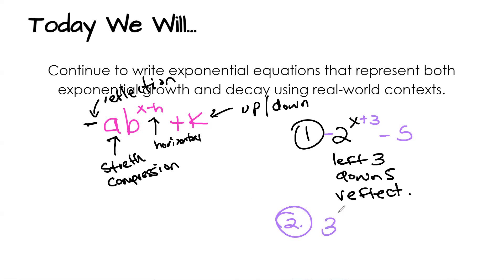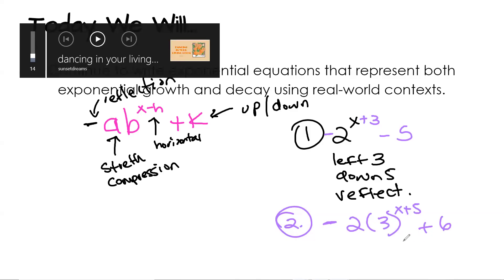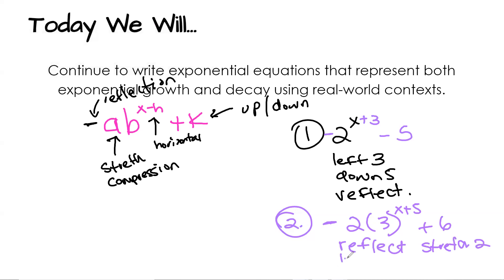If I give you a parent function of 3 to the x and I have negative 2 times 3 raised to the (x plus 5), plus 6 — can you describe the transformation? The negative means reflect. The 2 means a stretch by 2. The 5 in the exponent means left 5. And the 6 means up 6. The only one that's opposite is within the x exponent.